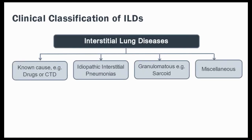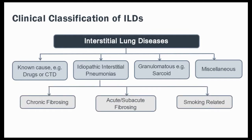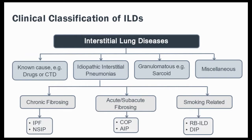This slide represents the latest American Thoracic Society classification of interstitial lung diseases. The top half shows the four broad categories of interstitial lung diseases. The category of idiopathic interstitial pneumonias is further subdivided into three different sets based on the tempo of disease progression, that is acute versus chronic, and exposure to cigarette smoke.